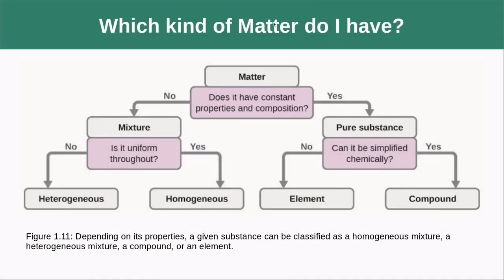This flowchart is a useful way of distinguishing the different kinds of matter. Start with matter as distinct from energy. First ask: does it have constant properties and composition? If no, it's some kind of mixture — then ask if it's uniform throughout. If no, it's heterogeneous (like salad dressing); if yes, it's a homogeneous mixture. If it does have constant properties and composition, it's a pure substance — then ask if it can be broken down chemically further. If no, it's an element; if yes, it's a compound.